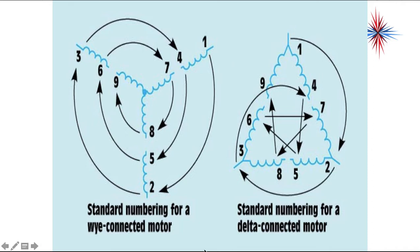So, you have some standard numbering. If it's a single voltage, you won't have two windings here. But you have standard numbering for a Y-connected motor: 8, 5, and 2; 6, 9, and 3; 7, 4, and 1. And this motor is going in a clockwise rotation.